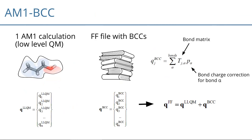The basic idea of AM1 BCC: you use a cheap method like AM1 to get an initial set of rough charges, then correct those charges with bond charge corrections (BCCs). BCCs allow you to transfer electrons from one atom forming a bond to the other — reducing the charge on one atom and adding the same amount to the other. The amount of electrons transferred is stored in the force field file where BCCs are parameterized.